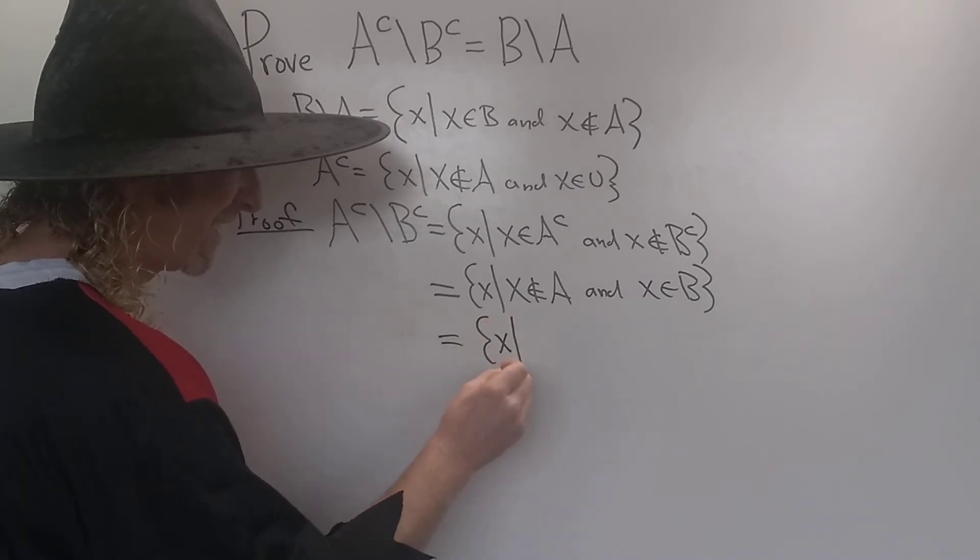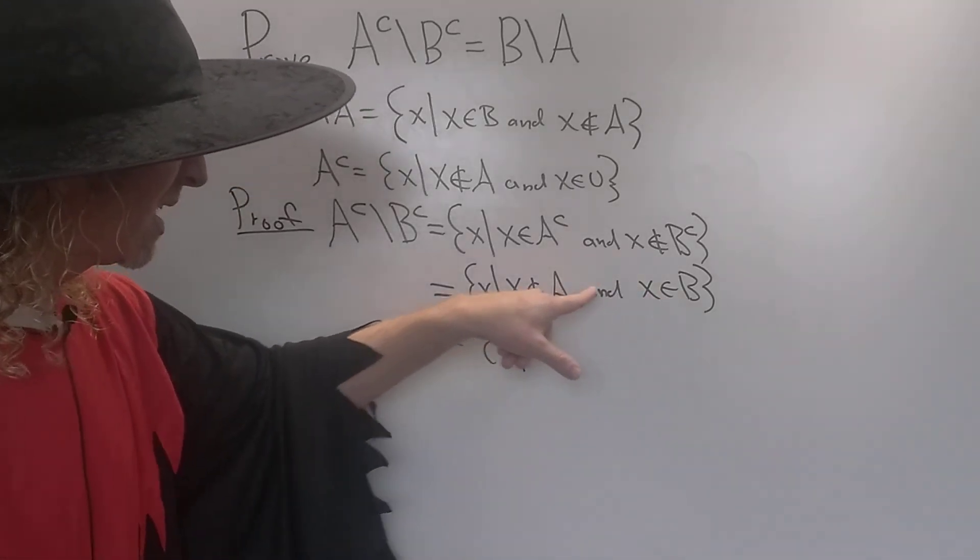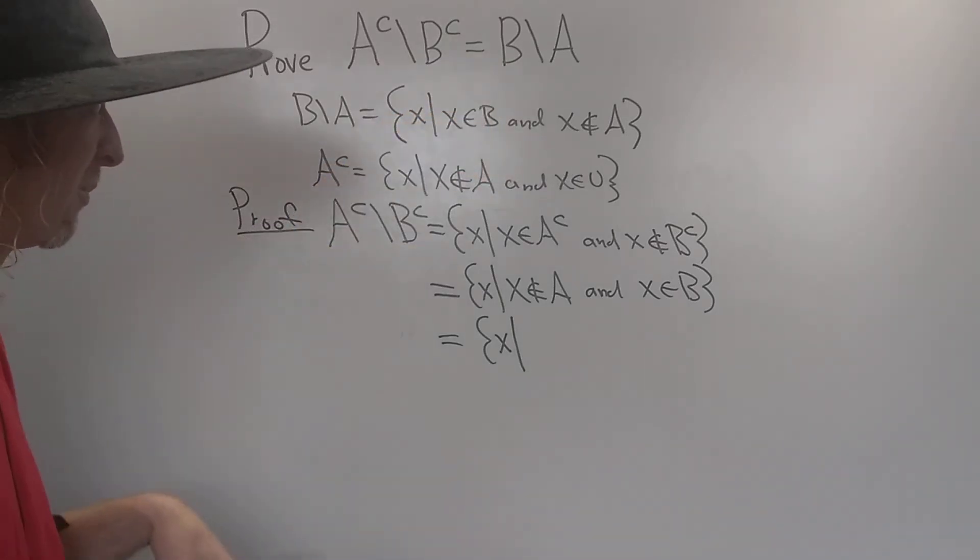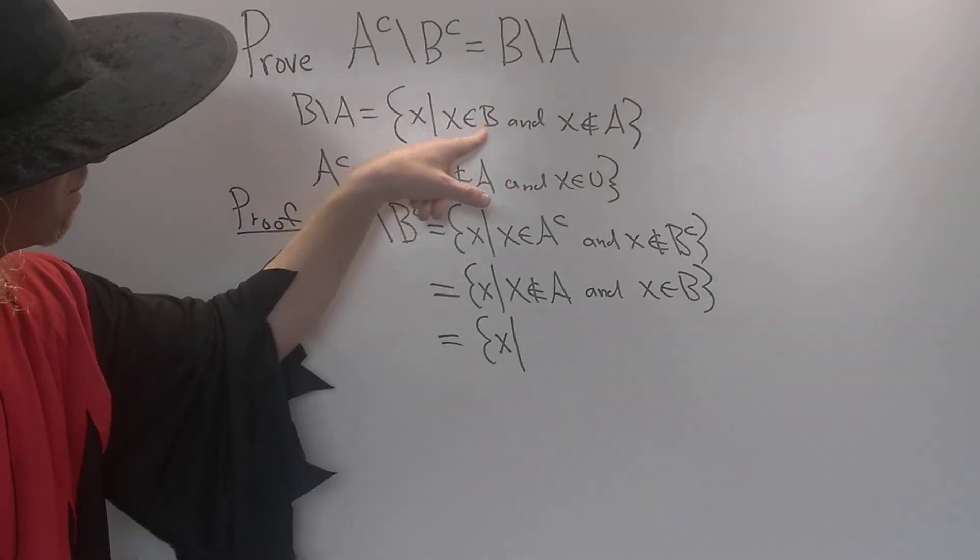So this is a set of all X such that X is in B and X is not in A. That's precisely the definition of B set minus A. It's up here. Look. Except it's written backwards.